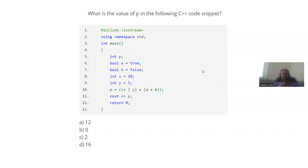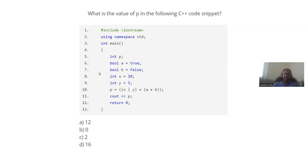What is the value of P in the following C++ code? P is equal to X OR Y. The value of X is equal to 10, and Y is equal to 5.